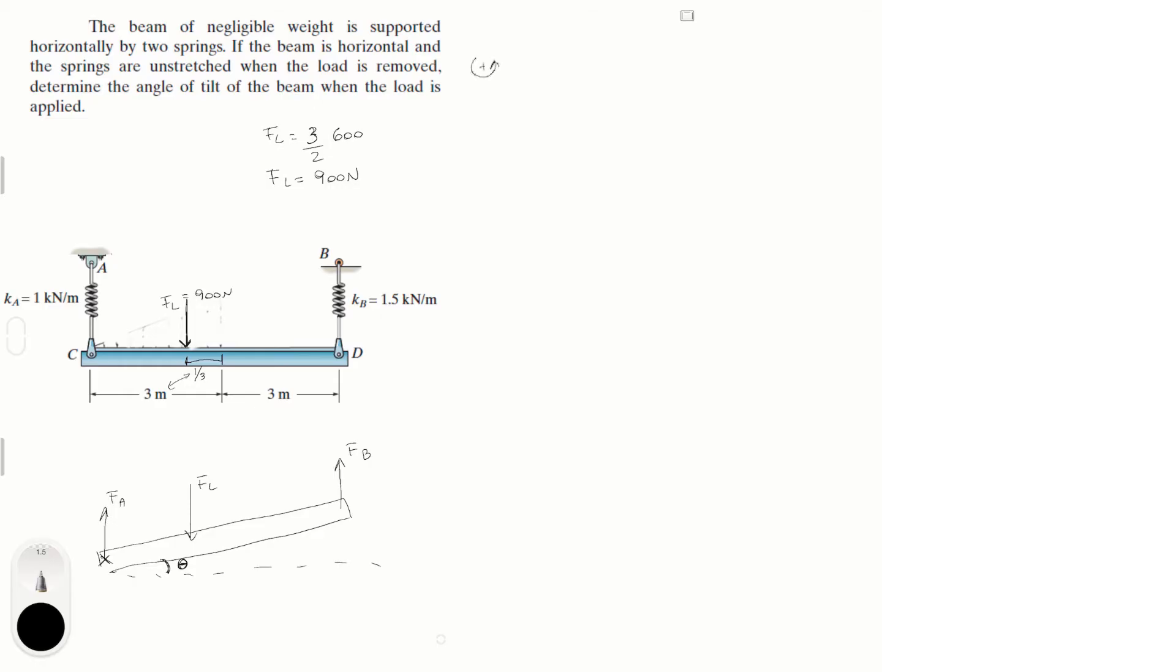So you know that assuming counterclockwise is positive, the moments around A are equal to zero, and they're equal to F_L times this distance right here. Now you know that this distance is three meters, but the distance from C to where F_L happens is two meters, because this is one third of three meters. Now you know that then this distance right here is two meters. So you know that the sum of the moments about A, you have the F_L times the distance, horizontal distance right here, which is given by two cosine of theta.